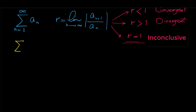Consider this series: sigma from n equals one to infinity of n over 2 to the n. We want to use the ratio test to find out whether this series is convergent or divergent. Let a sub n equal n over 2 to the power of n.